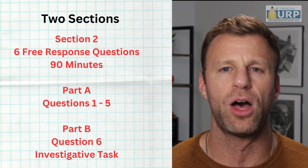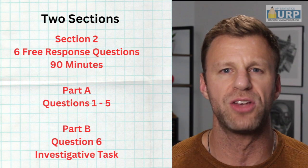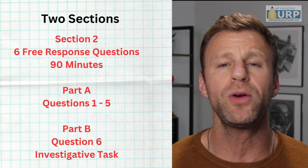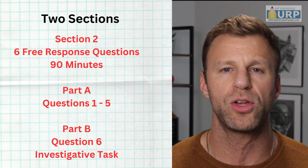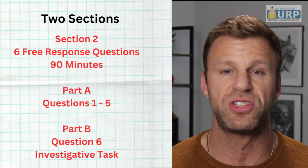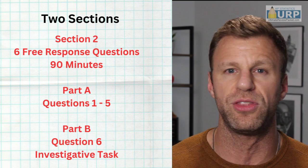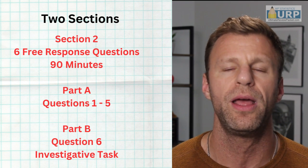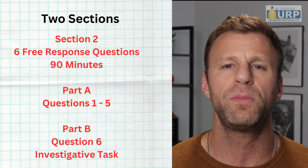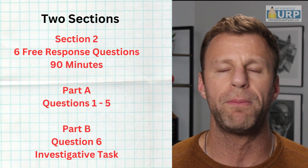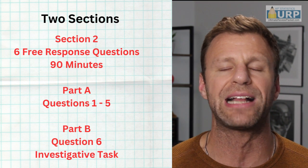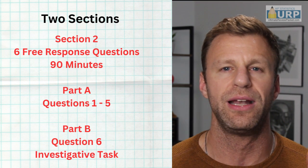Your proctor's not gonna tell you when part A is over and it's time for part B. You can actually do them in any order you want. You could start with six, then go to five, then three, then two, then one — however you wanna do it. I'll talk a little bit later in this video about my recommendation for how to handle it, but that's exactly what you're gonna see.